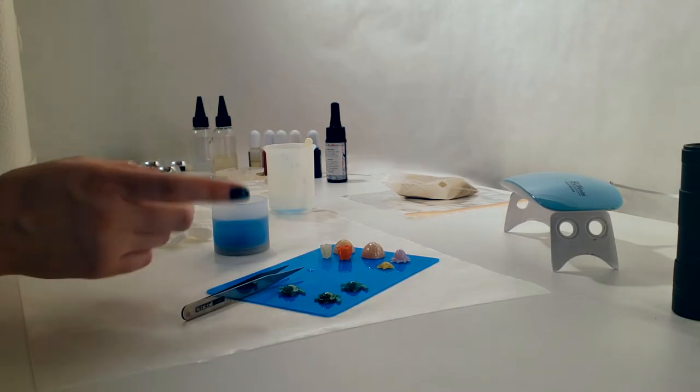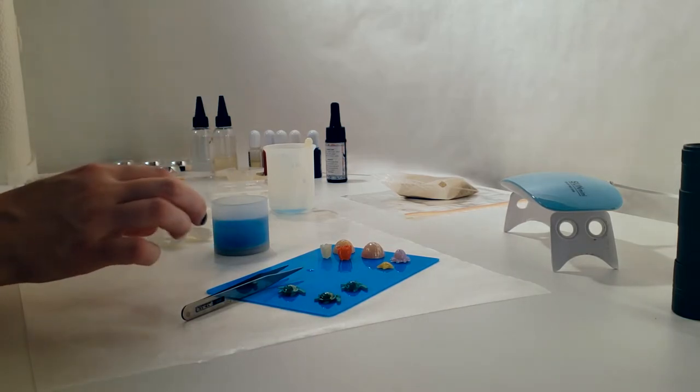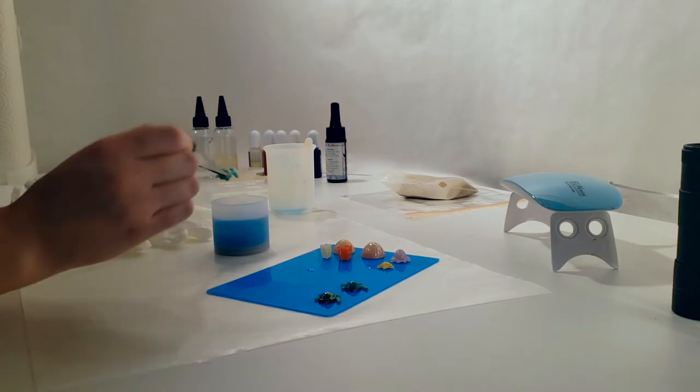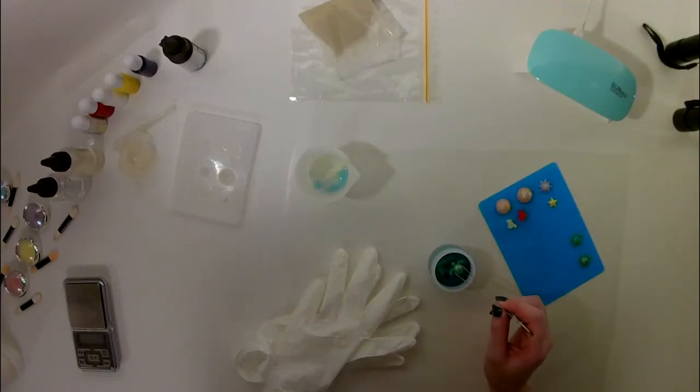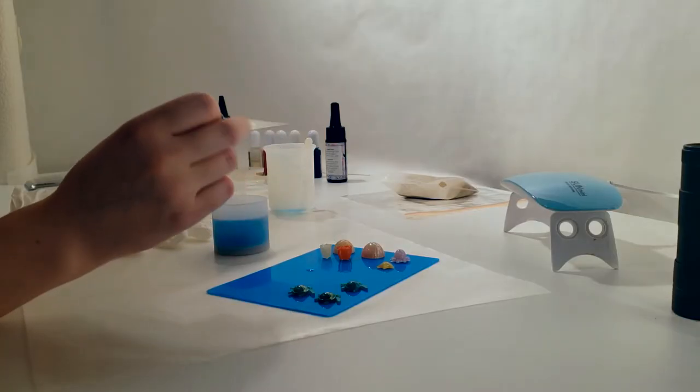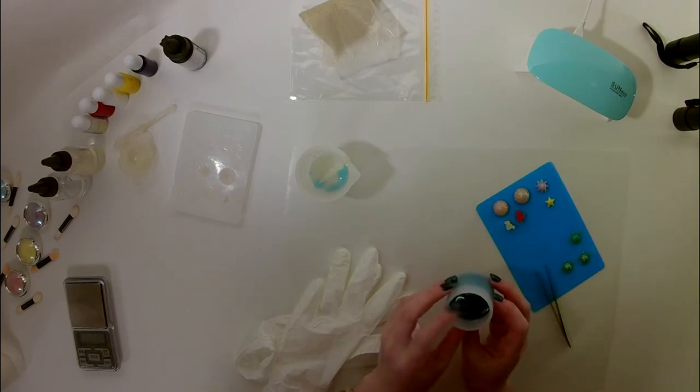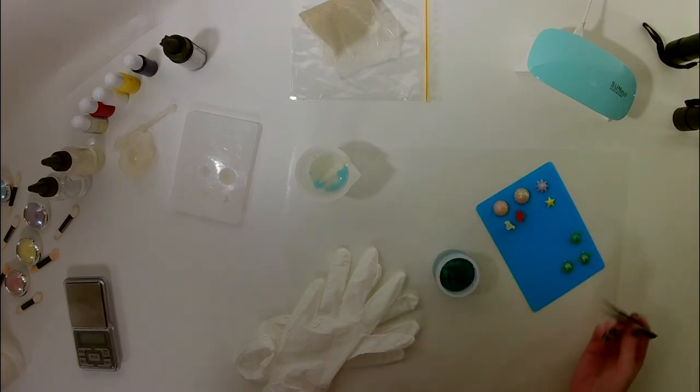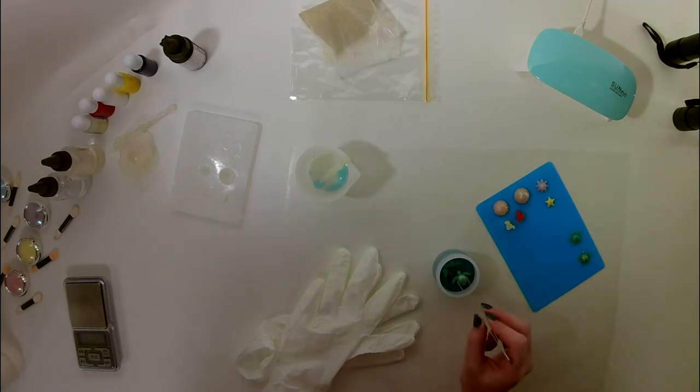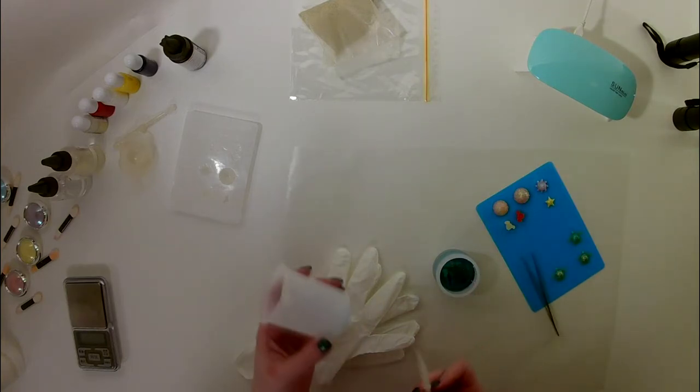So I did one more layer. It looks like I'll need to do one last layer to get the turtle in. I want to put the turtle in about here. So at the very top of the fish are in for now. And they're solidly in place. So it is cured again. I'm going to put some UV resin down and then put the little turtle on it. One more round of epoxy resin and then it'll be done.